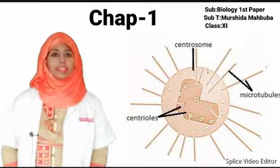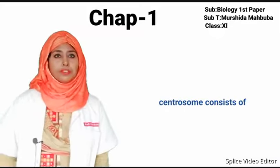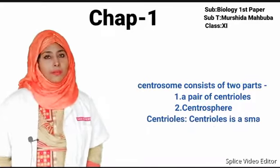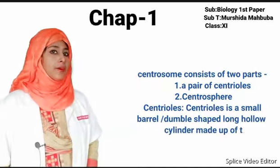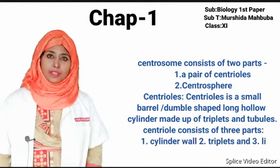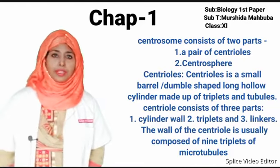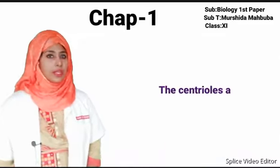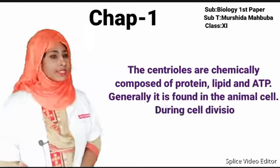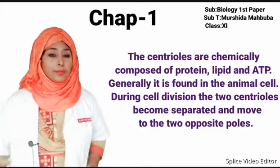Centrosome: A cell organelle located near the nucleus, made of centrioles and centrosphere, is known as the centrosome. Centrosome consists of two parts: a pair of centrioles and the centrosphere. Centrioles are small barrel or tumble-shaped, long, hollow cylinders made up of triplet tubules. The wall of centrioles is composed of nine triplets of microtubules. Centrioles are chemically composed of protein, lipid, and ATP, and are generally found in animal cells. During cell division, the two centrioles separate and move to the two opposite poles.